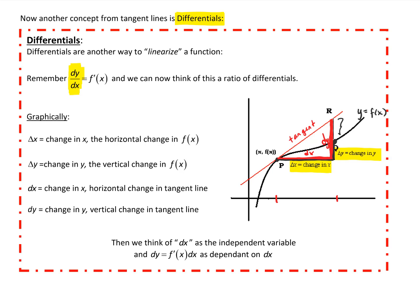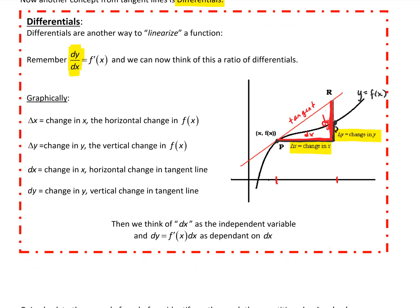As we move further away the gap widens, and as we move closer the gap gets smaller and smaller. As we make delta x (and dx) smaller, delta y and dy become closer approximations of each other.